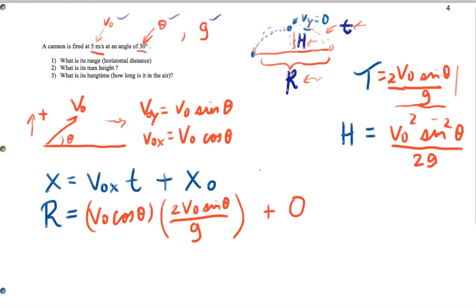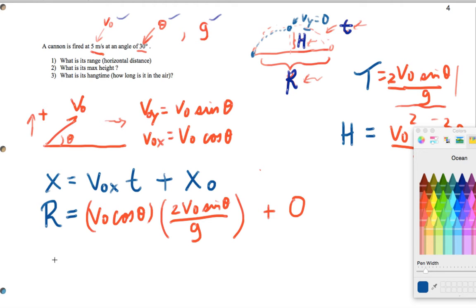So it actually turns out the range is given by the formula r equals v naught squared, and I'm going to gather some terms together, 2 sine theta cosine theta all over g. And it turns out that this particular formula can actually be reduced